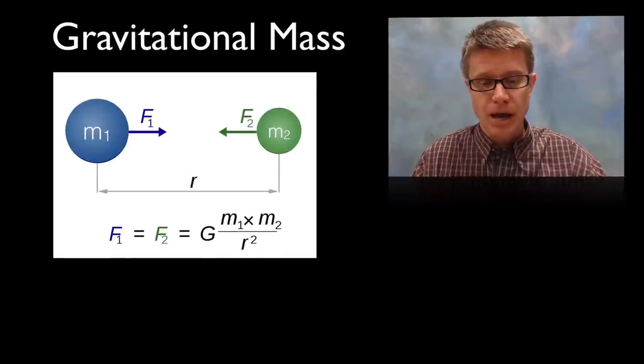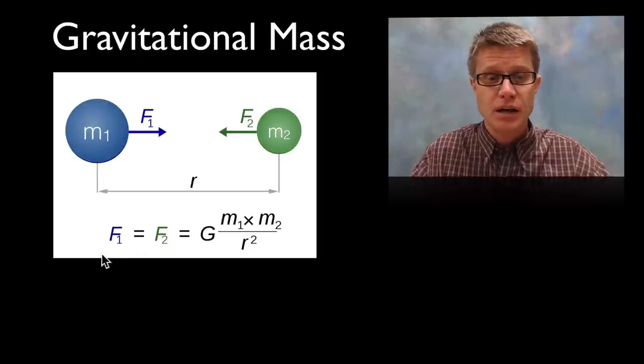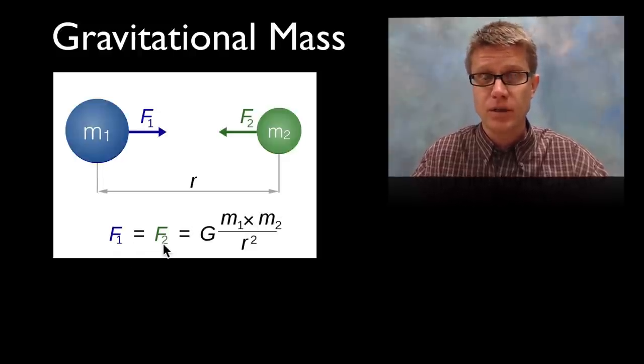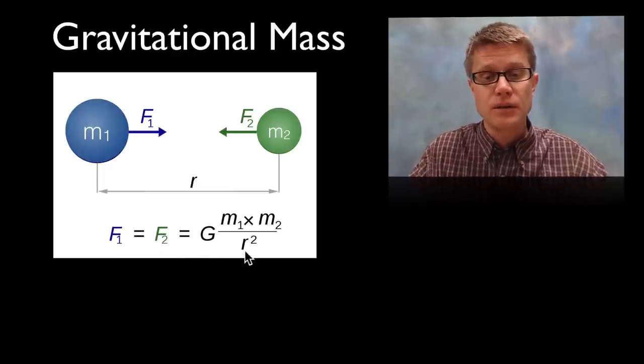Gravitational mass, as I said before, is based on two things: the mass of the two objects, and note this—that the force on object one and two are identical. The earth pulls on you, but you are also pulling on the earth. And then the other thing is the radius between those two objects.